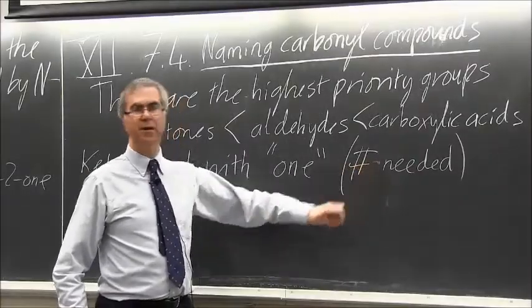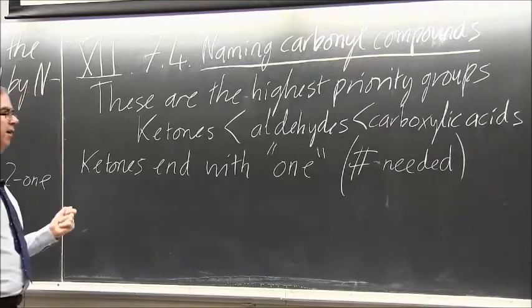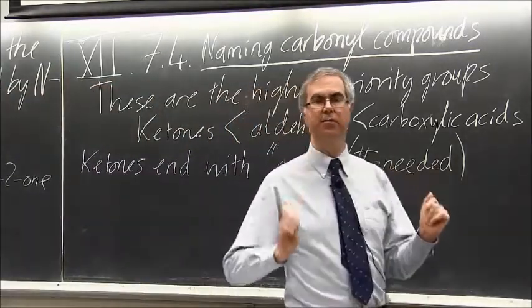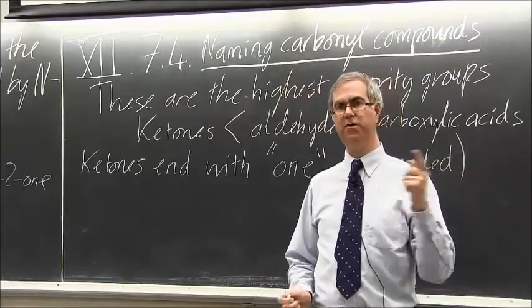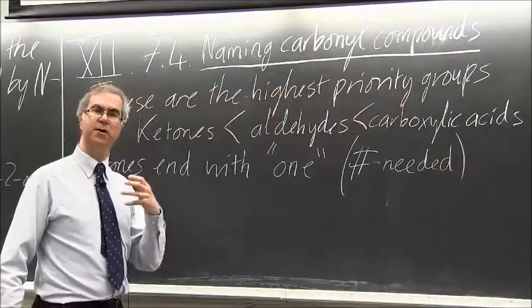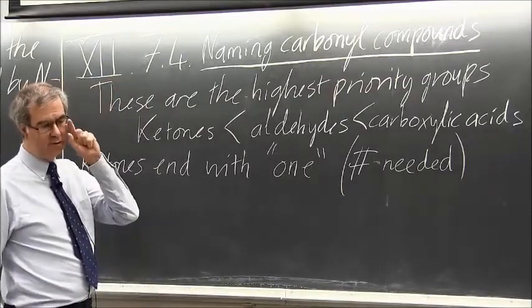And you need a number because a ketone, if you have a chain of ten carbons, could come at any of the other eight positions, not on the end ones. Those are going to give rise to a two-one, a three-one, a four-one, etc. So you need to show the position.